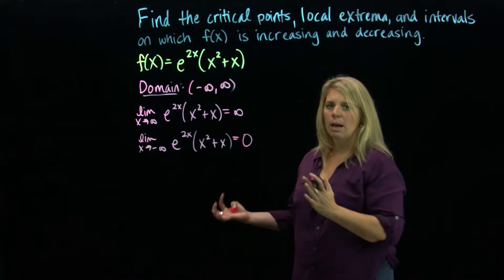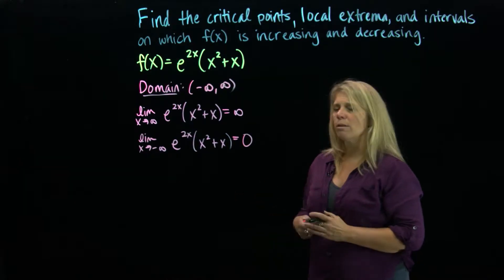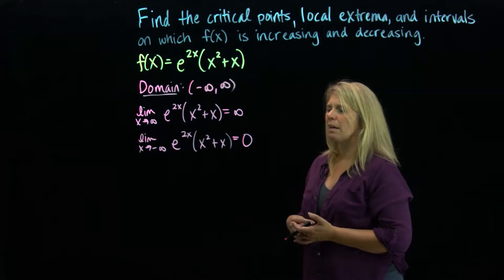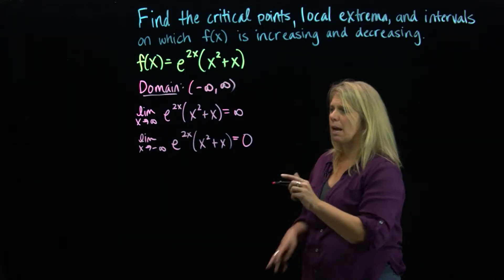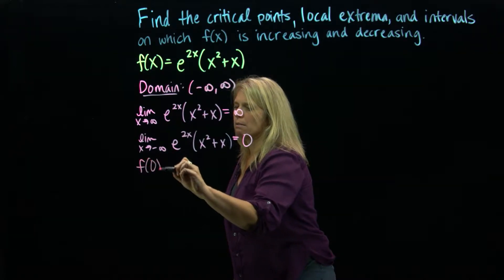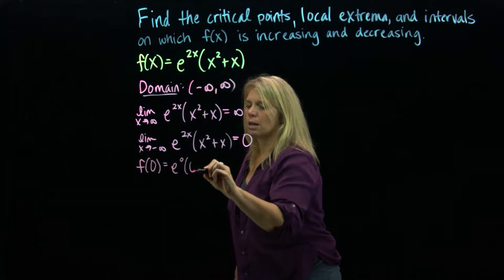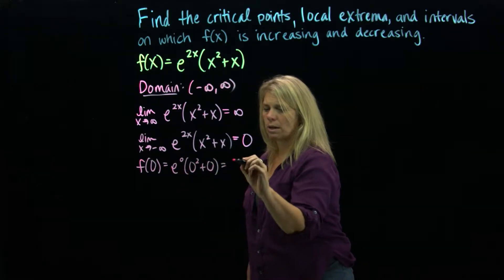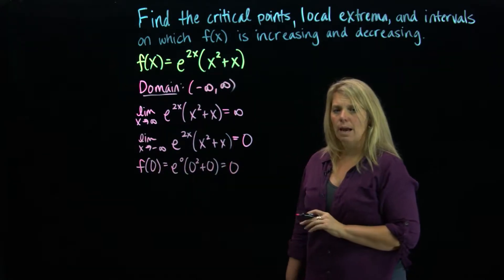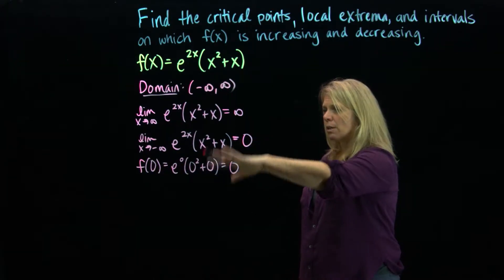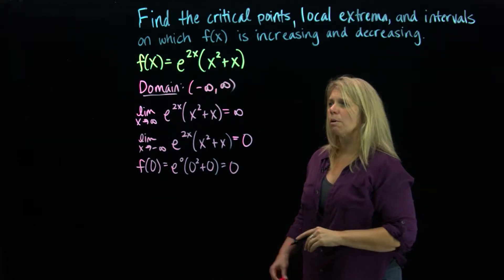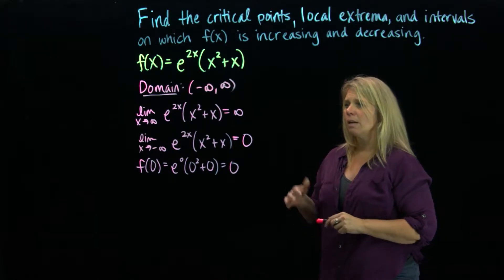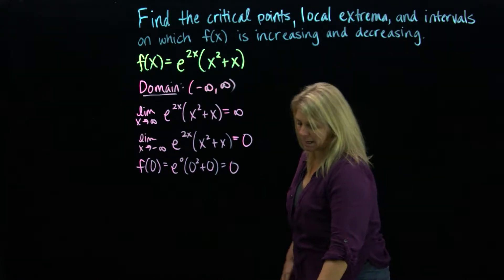That tells us about the end behavior of our graph. We can also plug in some x values to get y values. A really easy one to plug in is x equals zero: e to the zero times zero squared plus zero — zero squared plus zero is zero times one — so we get zero. That tells us we have a point at (0, 0). Although none of that was explicitly asked, all of that is helpful when thinking about this function and its graph.